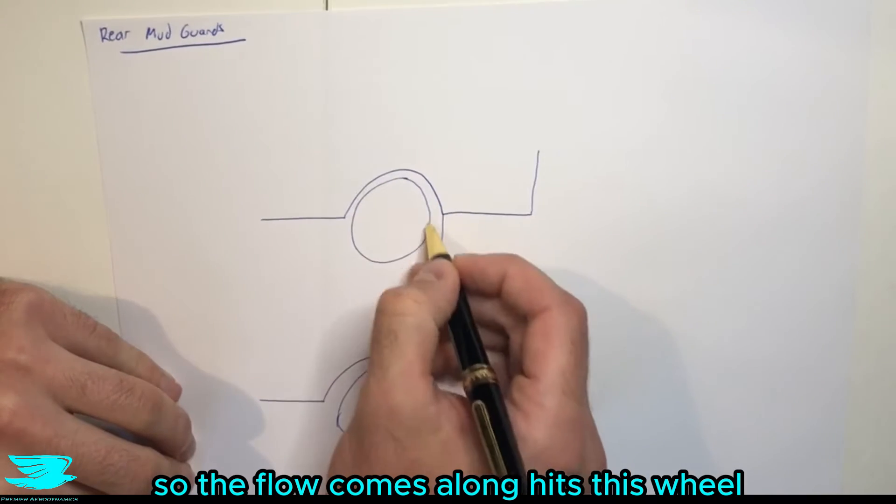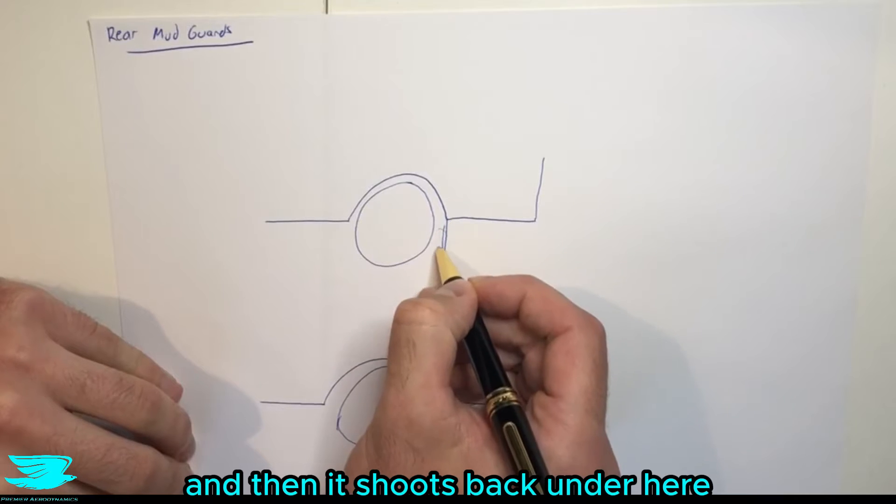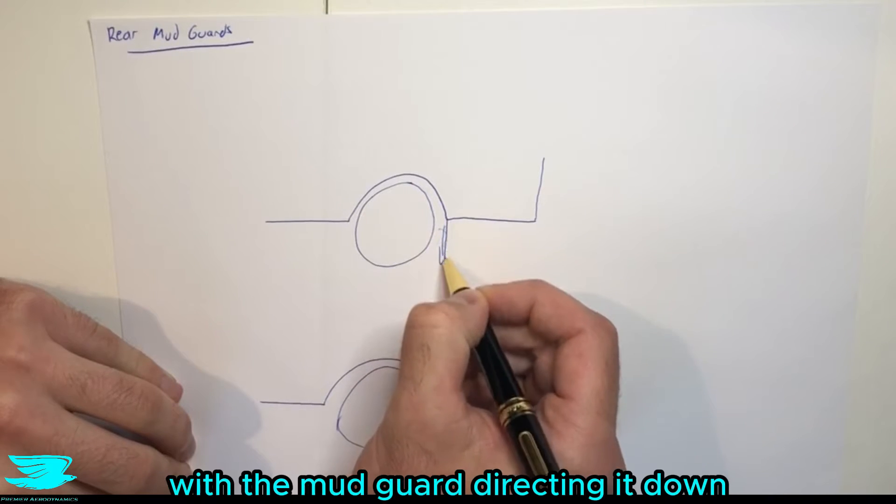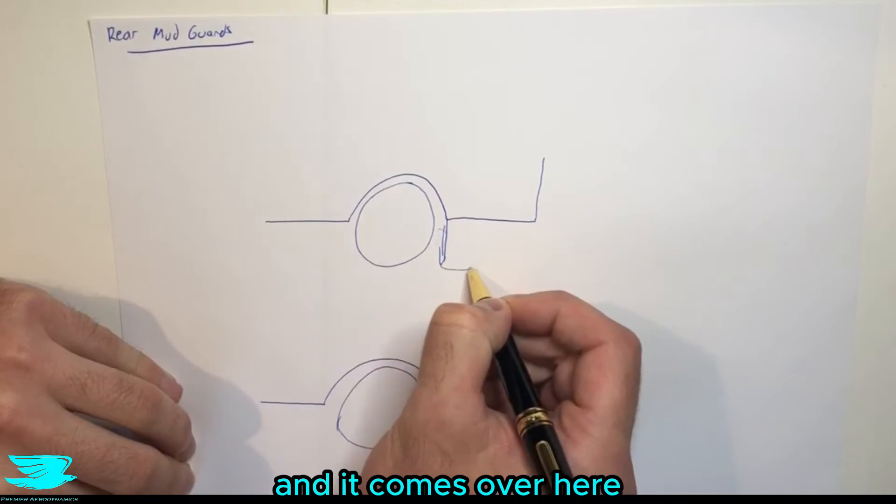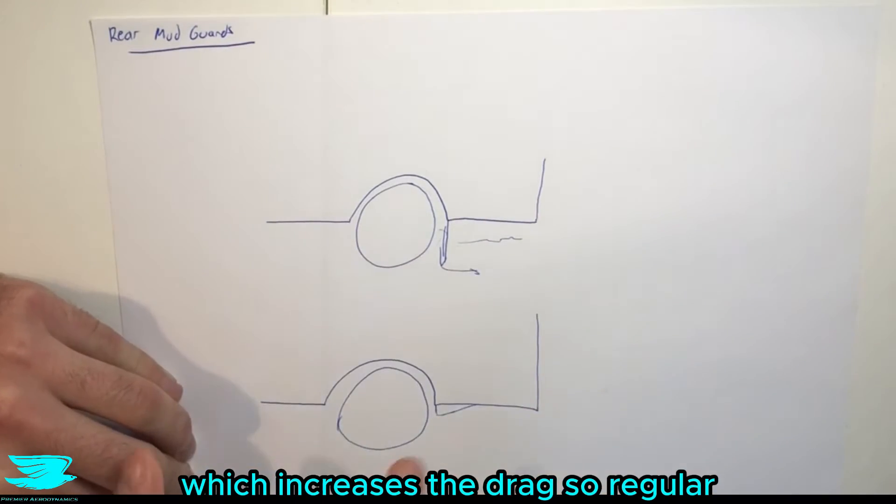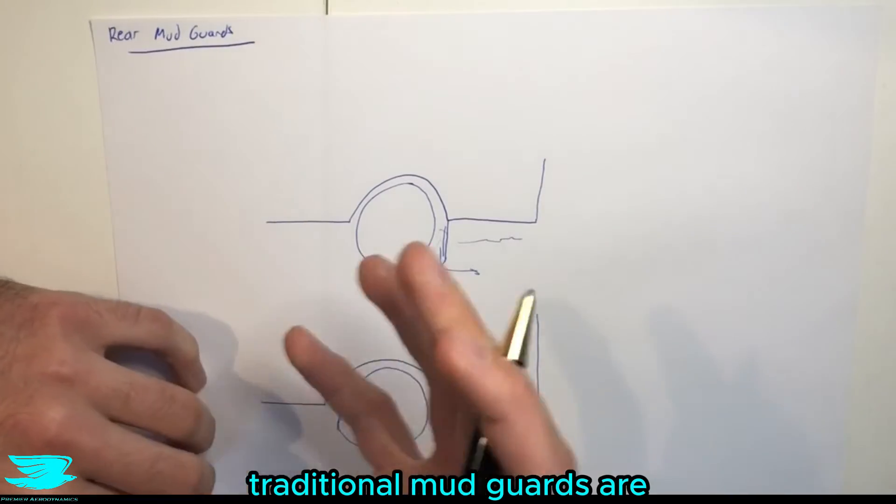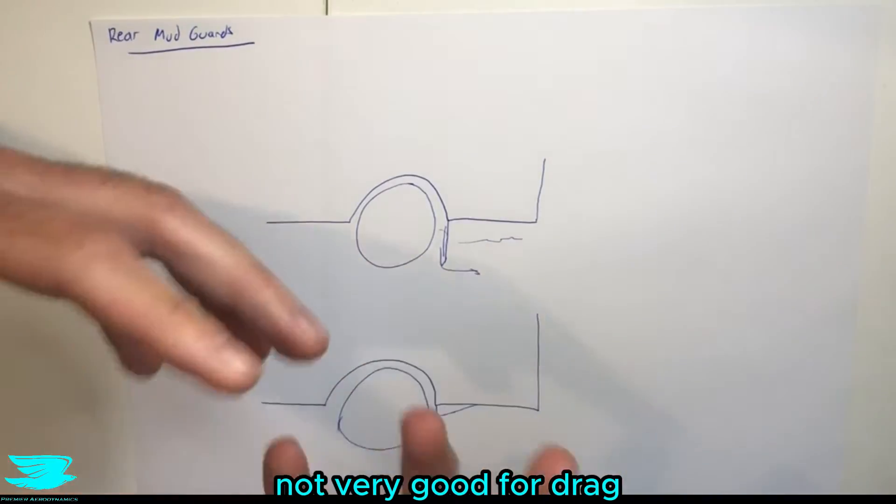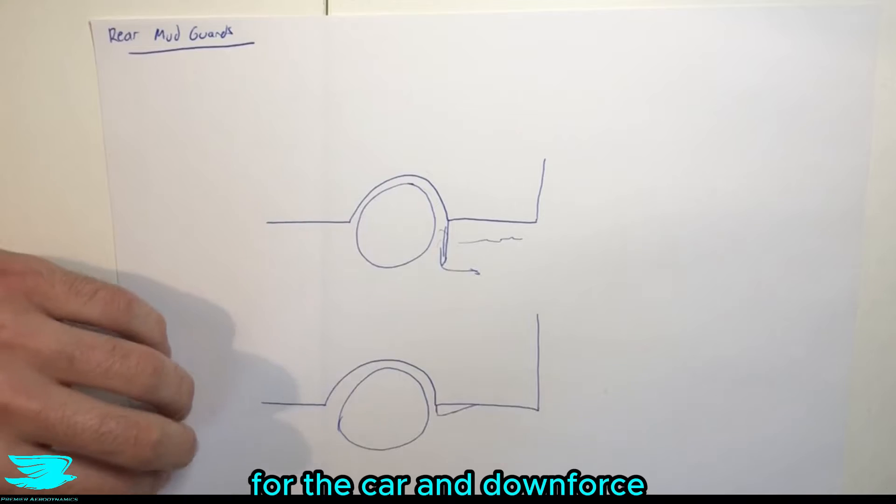So the flow comes along, hits this wheel, then we have a wake and then it shoots back under here with the mudguard directing it down and it comes over here. And then we have a wake from this mudguard which just increases the drag. So regular traditional mudguards are not very good for drag and general lift as well for the car and downforce.